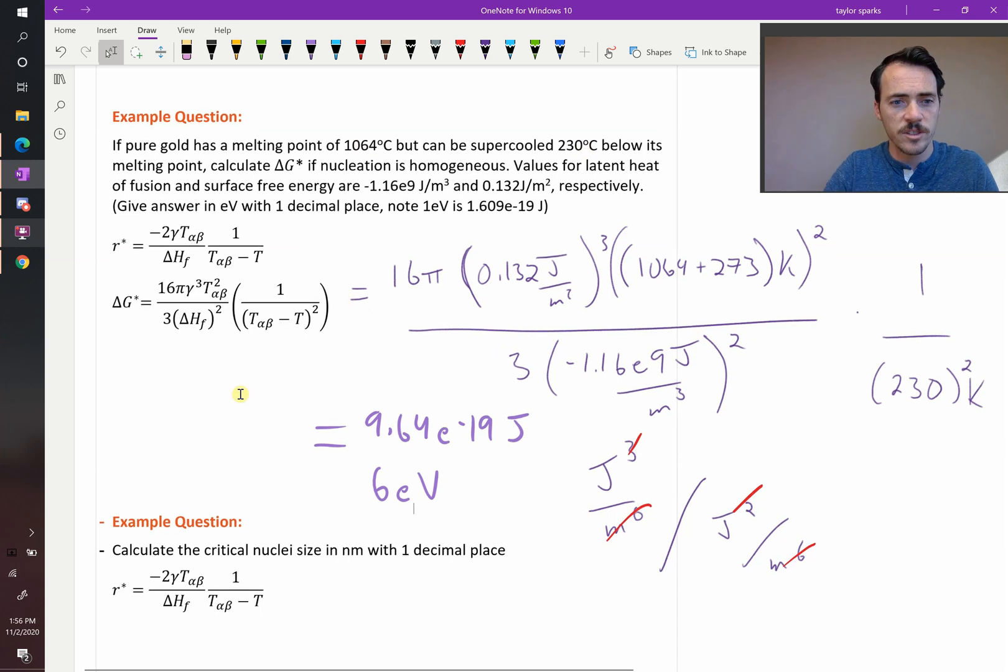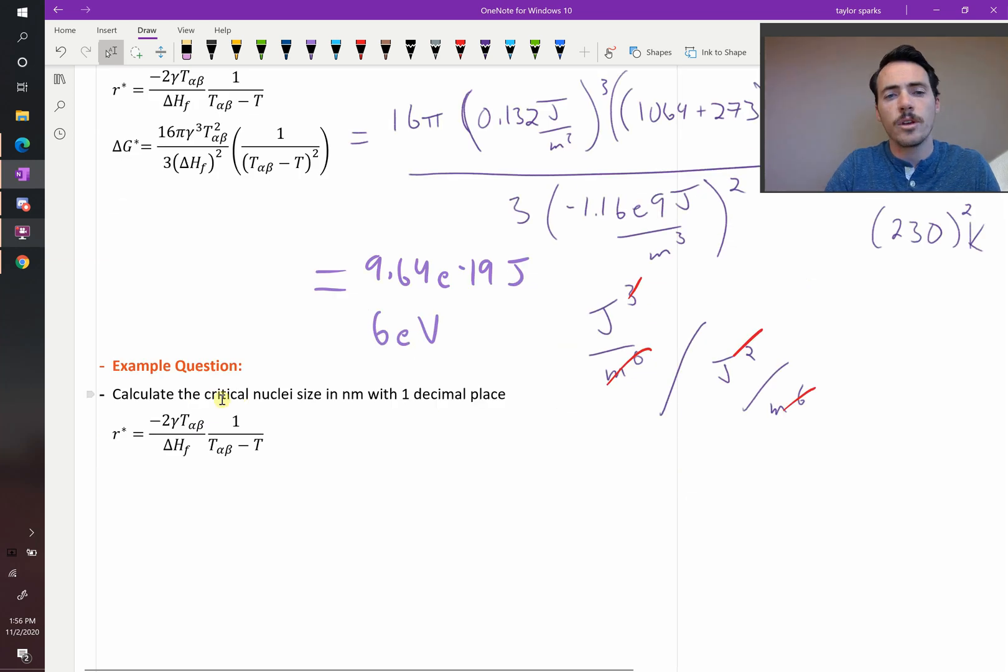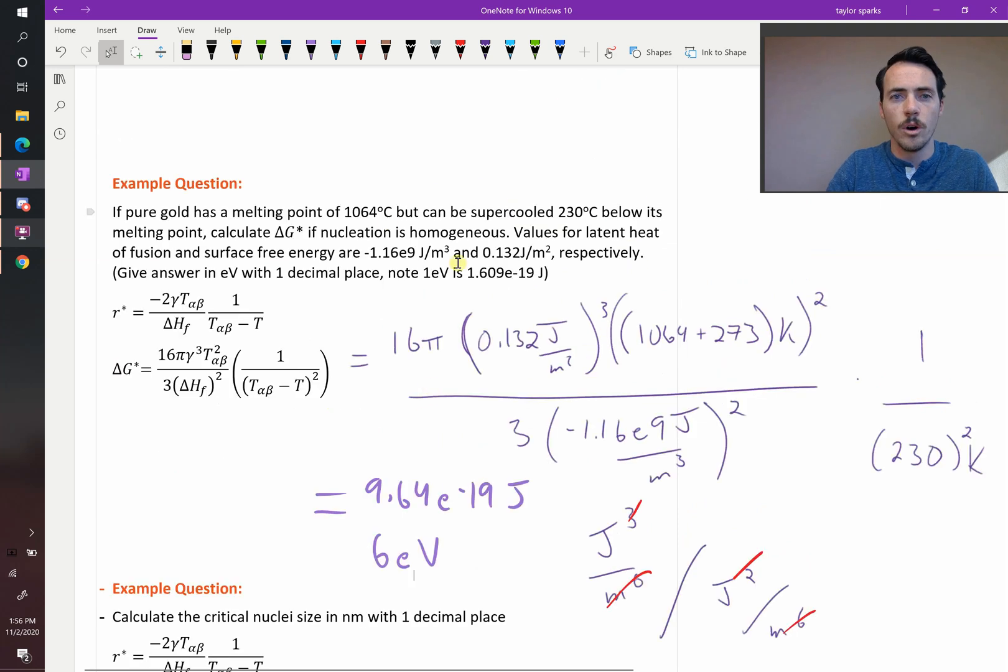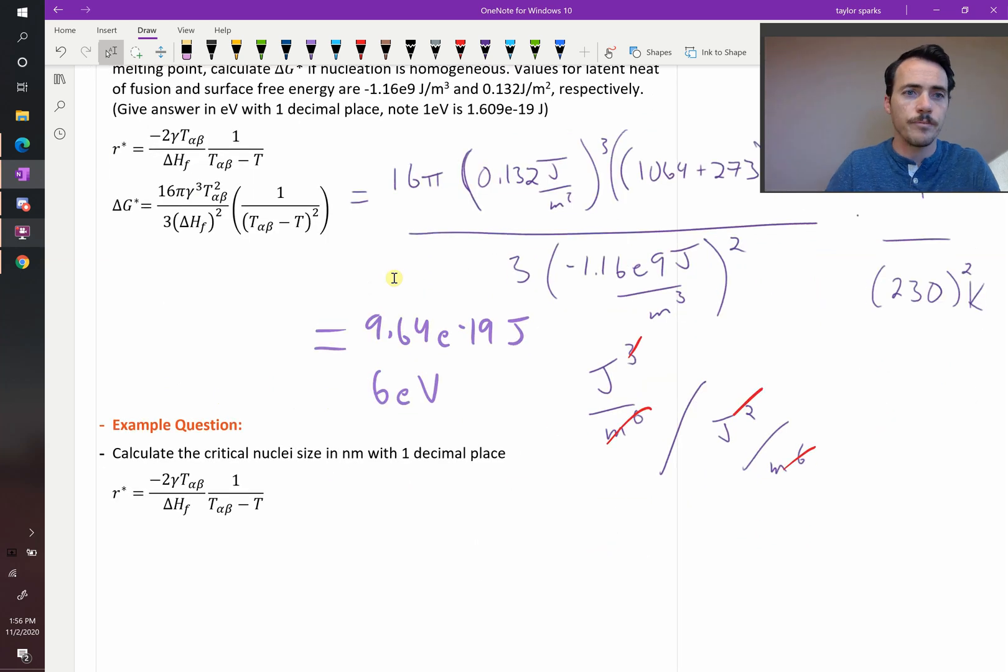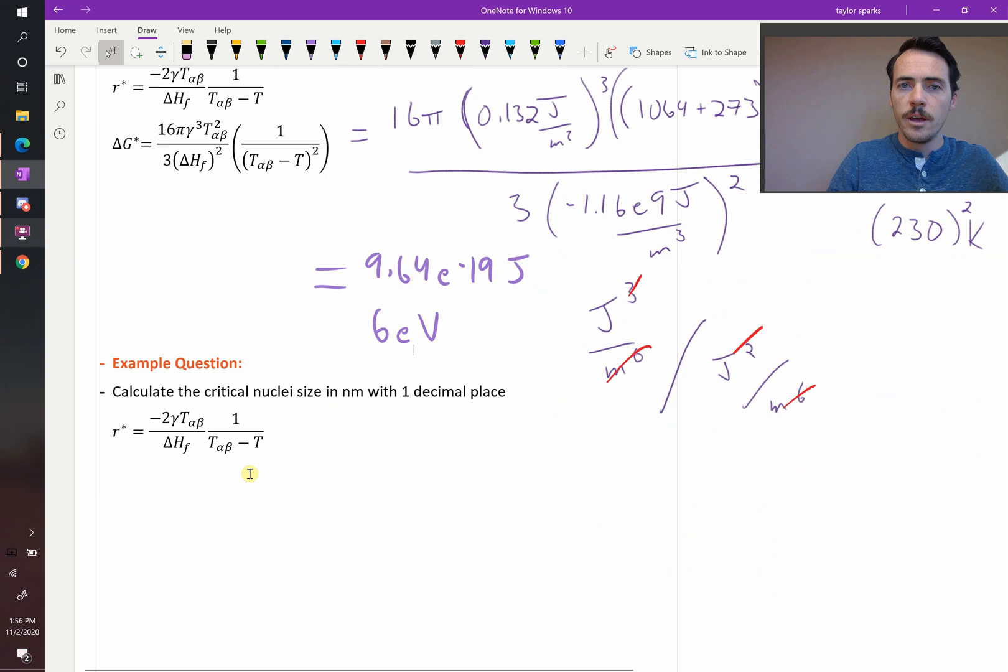Now the next question says this: go ahead and calculate the critical nuclei size in nanometers with one decimal place. So under these exact same conditions, how big is that size of particle that will continue growing versus shrinking? What's the cutoff size? Well, we can do that. We're just going to plug things in here, and it's the same as before, the same approach.